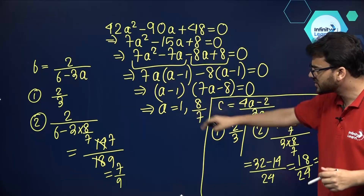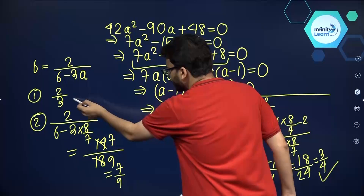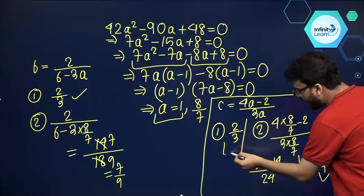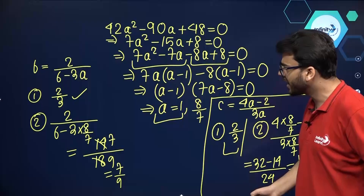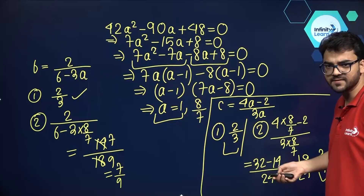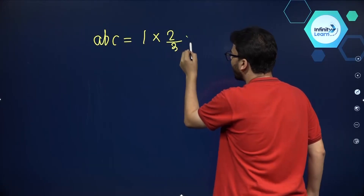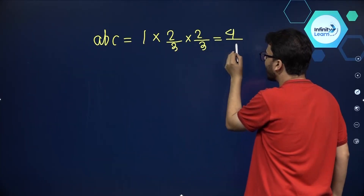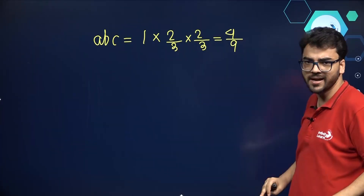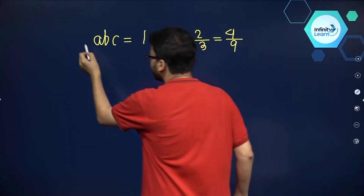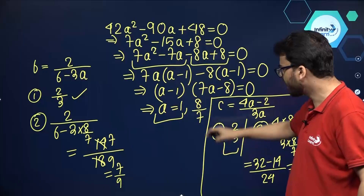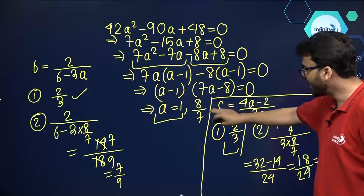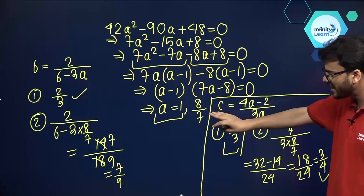So the first set of values is A equals 1, B equals 2/3, and C equals 2/3. The product A times B times C equals 1 times 2/3 times 2/3 equals 4/9. Since 4 and 9 are co-prime, this is in lowest form. The second set of values is A equals 8/7, B equals 7/9, and C equals 3/4. The product is 8/7 times 7/9 times 3/4, where 7 cancels, giving 2/3.